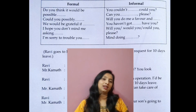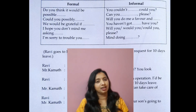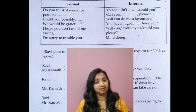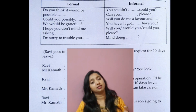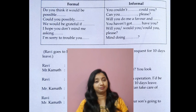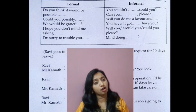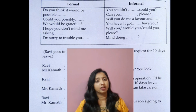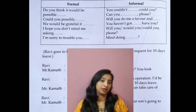Now for informal expressions: 'You couldn't do this, could you?' For example: 'You couldn't complete this project, could you?' Next: 'Can you complete this project for me please?' 'Will you do me a favor?' — favor means help. 'You haven't caught an idea, have you?' 'Will you / Would you / Could you complete this project for me please?' These are some expressions you can use.